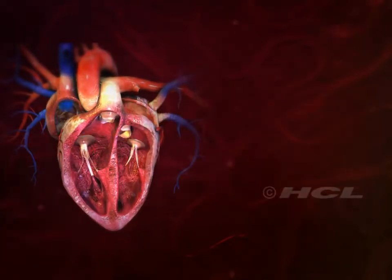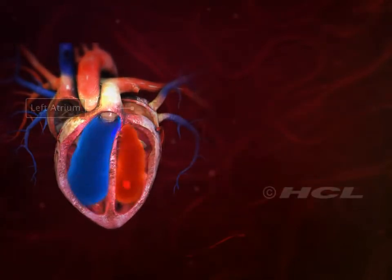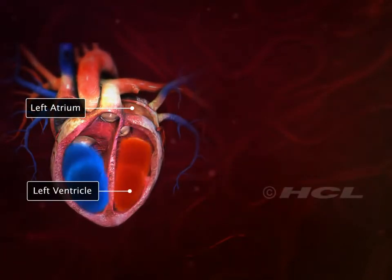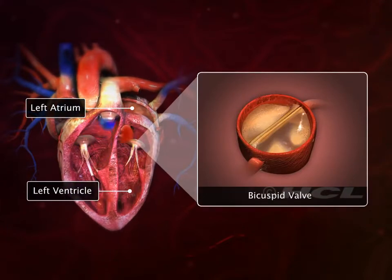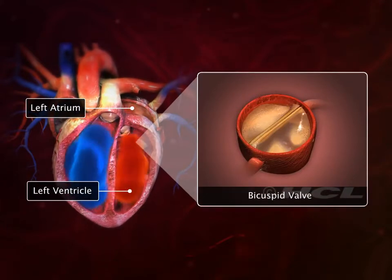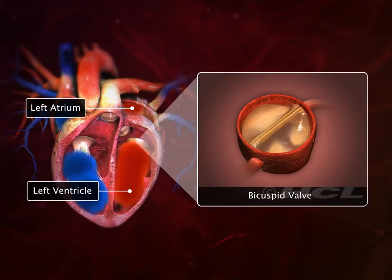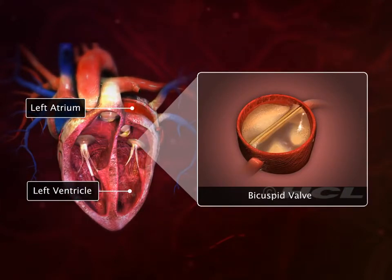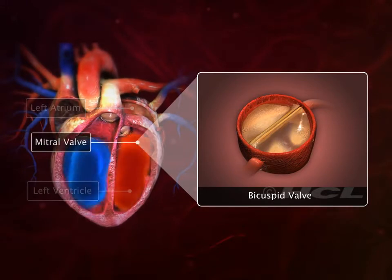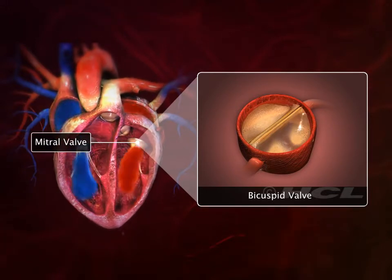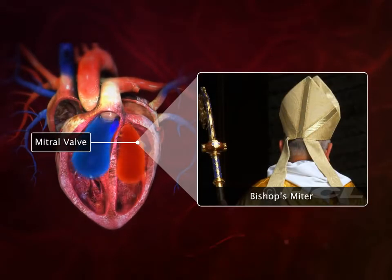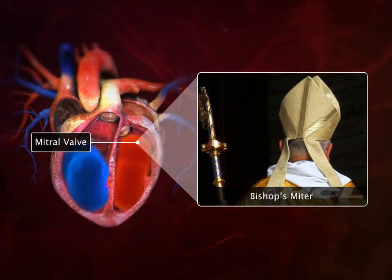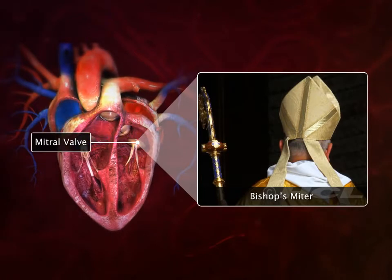On the other side, the left atrium and ventricle are connected through a bicuspid valve. The bicuspid valve is also called the mitral valve because of its resemblance to a bishop's two-sided mitre, or hat.